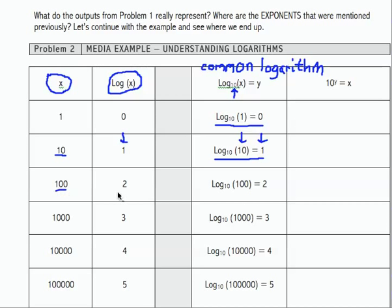When input is 100, output is 2 in the log function. That's log base 10 of 100 equals 2. Log base 10 of 1,000 equals 3. Log base 10 of 10,000 equals 4. And log base 10 of 100,000 equals 5. So those are all the pieces of information from the table.